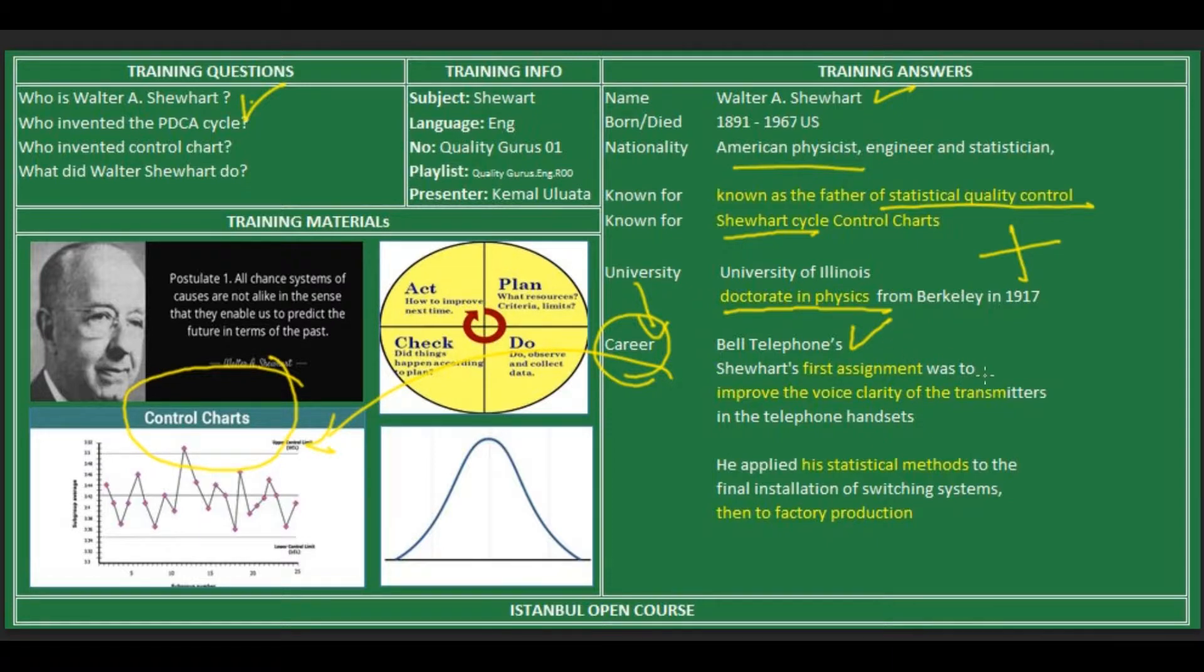Shewhart's first assignment was to improve the voice clarity in telephone headsets. He applied his statistical methods to the final installation of switching systems, improving voice clarity by using statistical methods. Then he applied these methods to factory production.